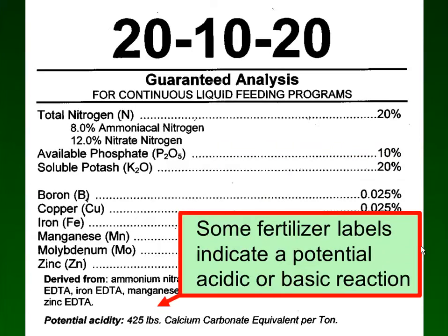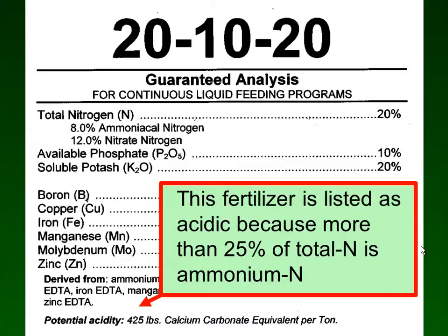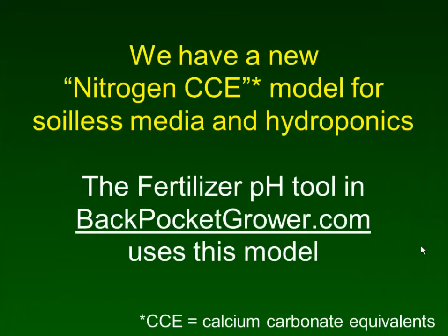Some fertilizer labels indicate whether that fertilizer is likely to have an acidic reaction or a basic one — whether it's going to push pH down or up. This fertilizer is listed as acidic, and typically fertilizers where more than 25% of total nitrogen is ammonium will have an acid reaction. Ammonium is a stronger acid than nitrate is a base. So this fertilizer, at 40% ammonium nitrogen, is an acidic fertilizer.